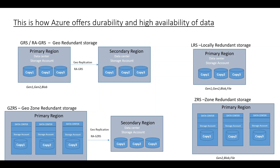So this is how it actually works. Coming to cost: LRS is definitely the least expensive of all. Then comes ZRS, then GRS, and then GZRS. This is how your cost scales, and you have to choose one of these options based on your requirement.